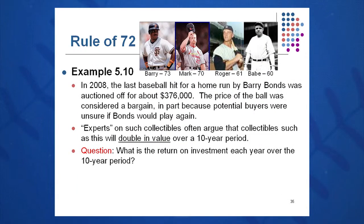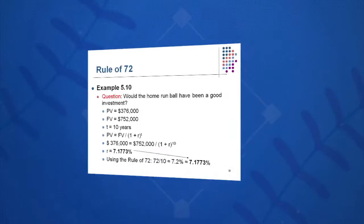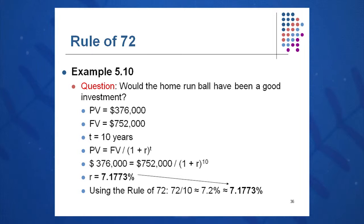Here's an example. In 2008, the last baseball hit for a home run by Barry Bonds was auctioned off for $376,000 — considered a bargain at the time, as buyers were unsure if Bonds would ever play again. Experts would often say that these collectibles would double in value over 10 years. Right away, we have the rule of 72 and we know the approximate rate of return: 72 divided by 10 equals approximately 7.2%. So even before you do any complex calculations in the future value or present value formula, you know the answer is going to be right around 7.2%.